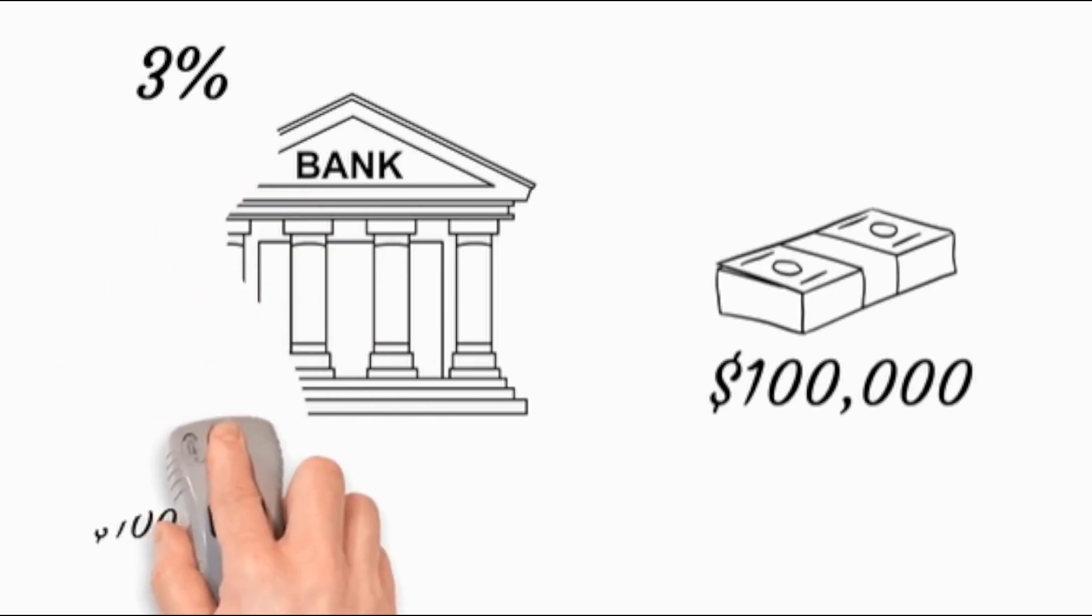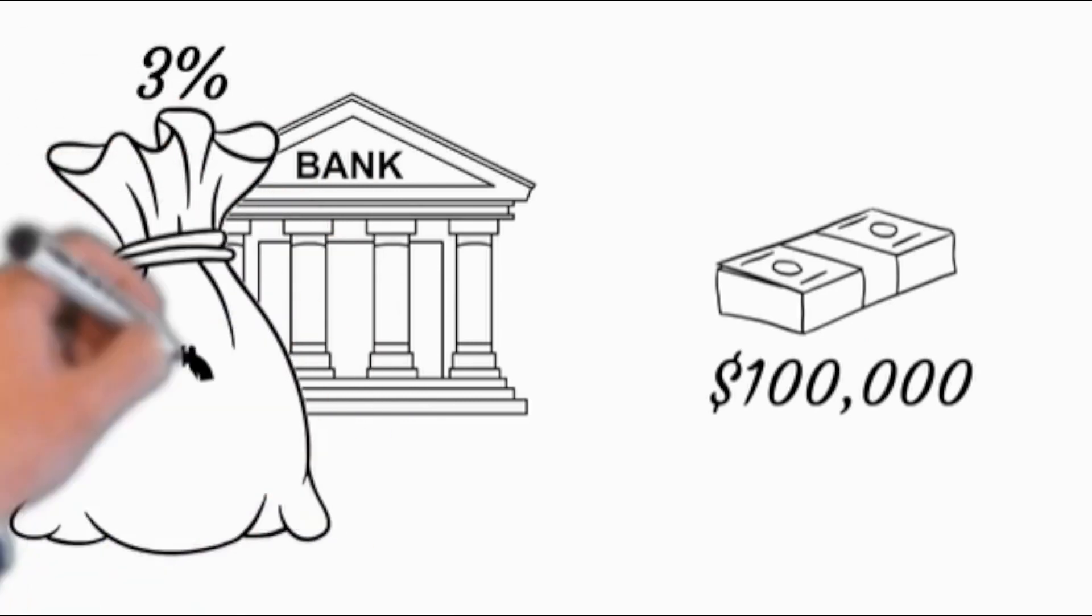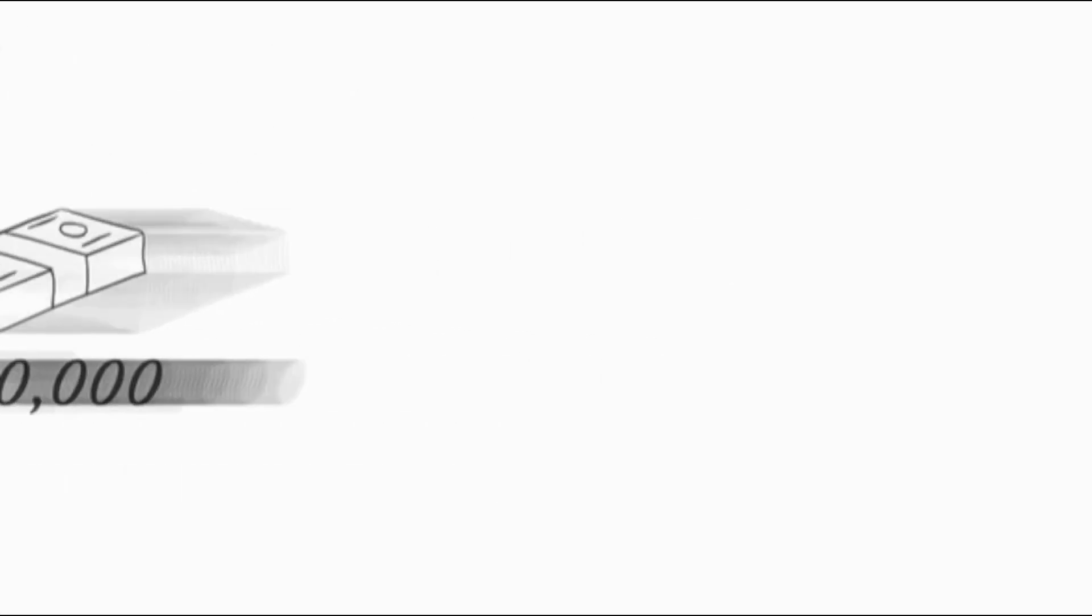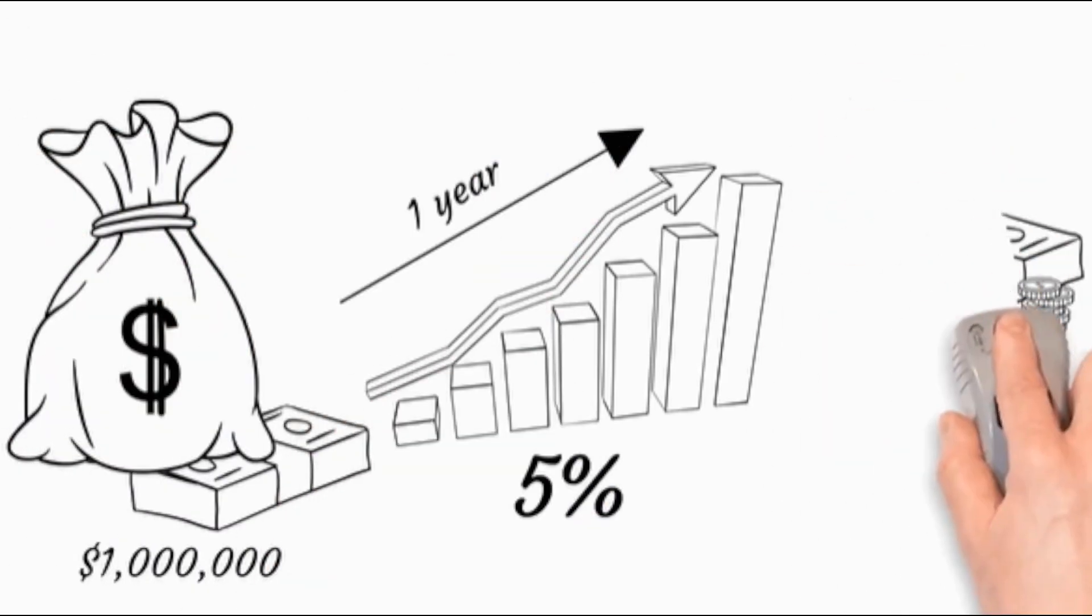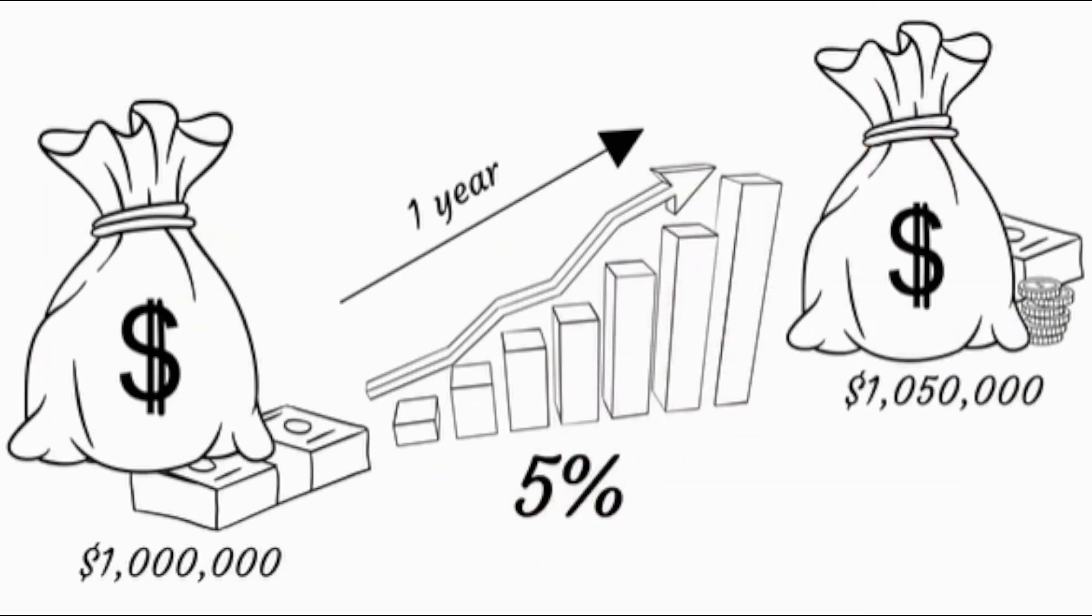Between your money and the bank's, you invest one million dollars. After a year of 5% growth, you have $1,050,000.